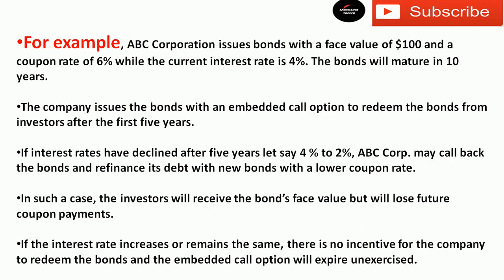ABC Corporation has the option to redeem the bond after five years, not before. Now suppose interest rates decline after five years — let's say from 4% down to 2%. What might ABC Corporation do? They may call back the bond and refinance their debt with new bonds at a lower coupon rate, because they originally issued at 4% but now rates have fallen to 2%.